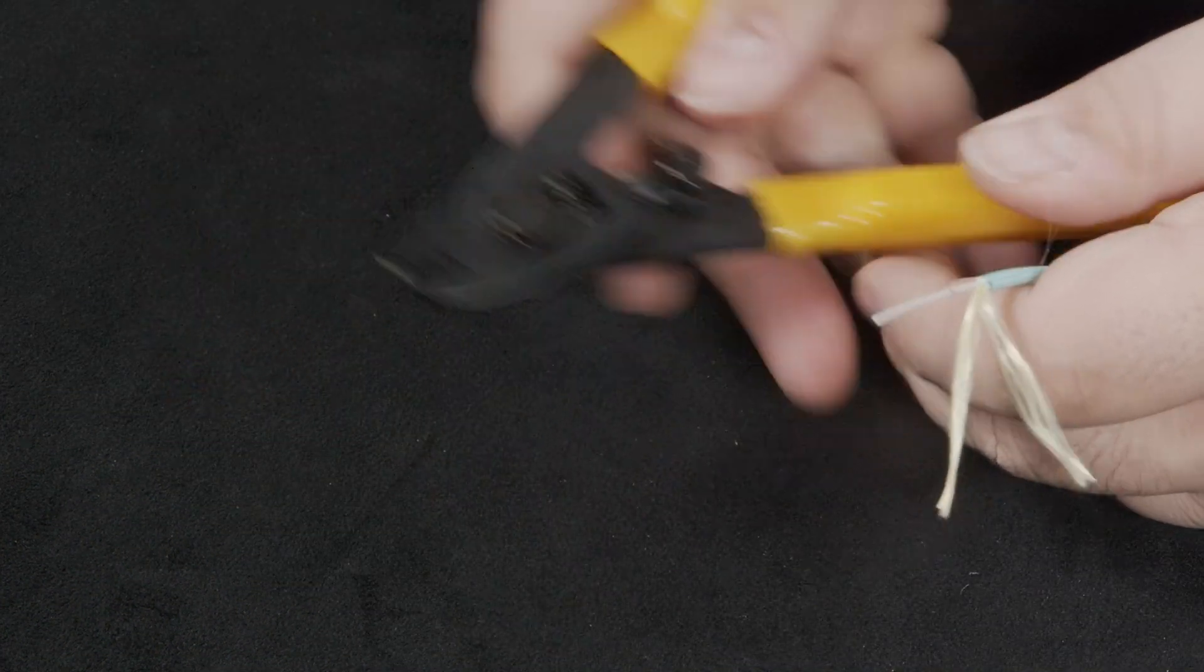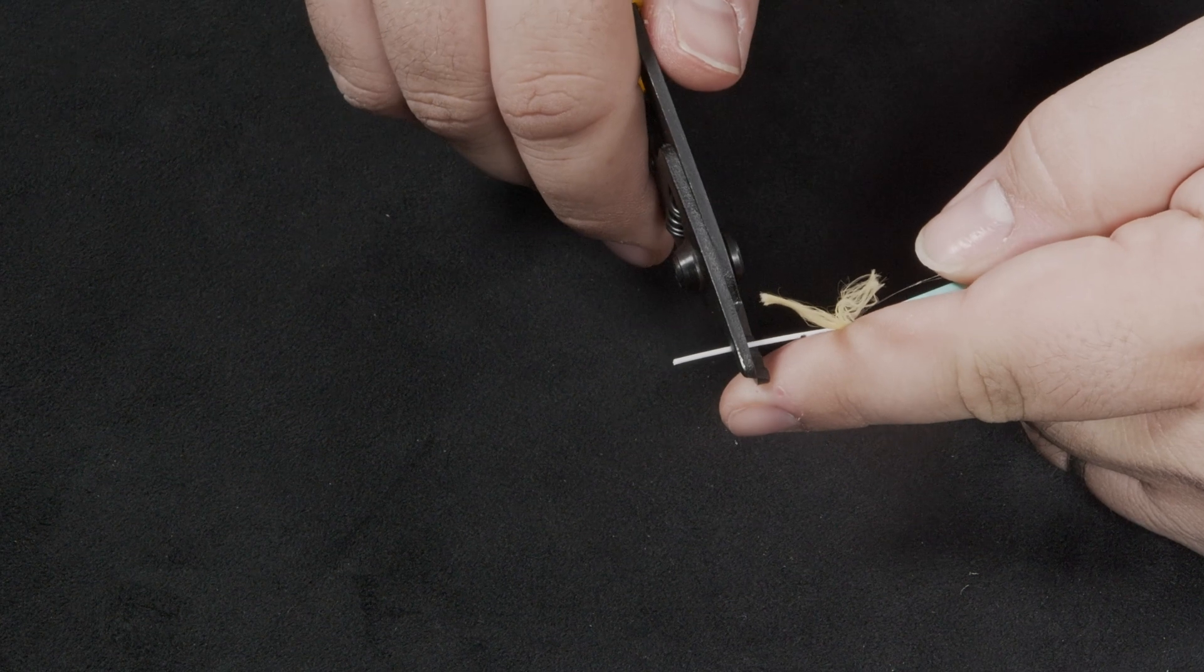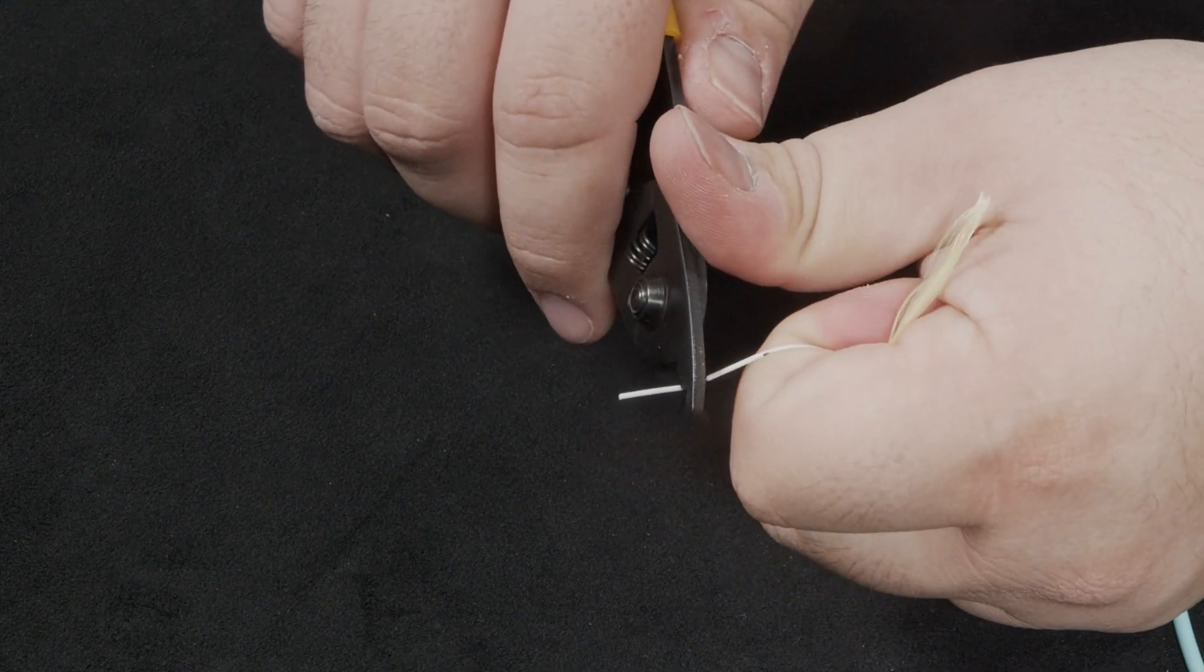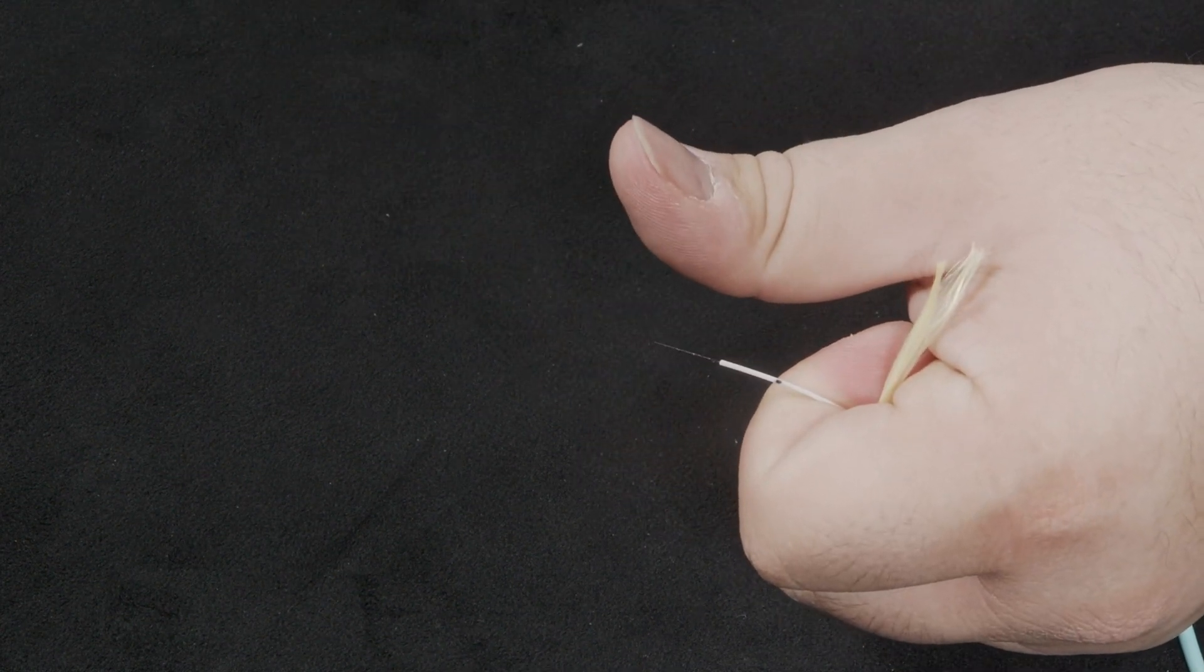Using the second opening on the fiber strippers remove the inner shielding. Only remove small sections at a time as the fiber can break if trying to remove too much at once.